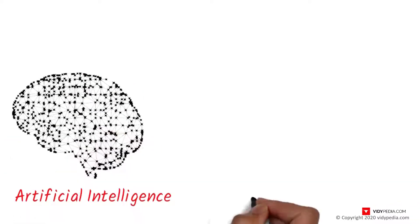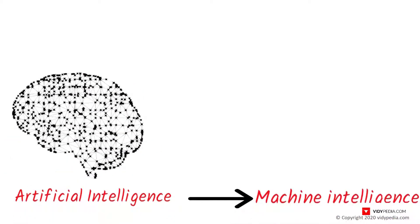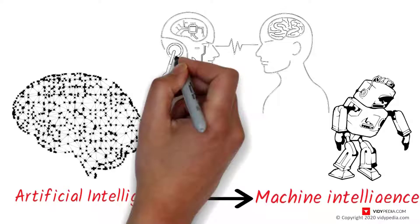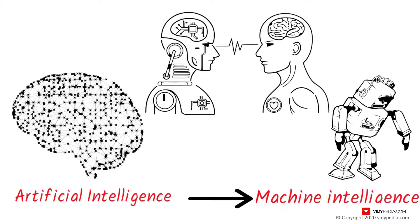Artificial intelligence, AI, sometimes called machine intelligence, is intelligence demonstrated by machines, in contrast to the natural intelligence displayed by humans and animals.